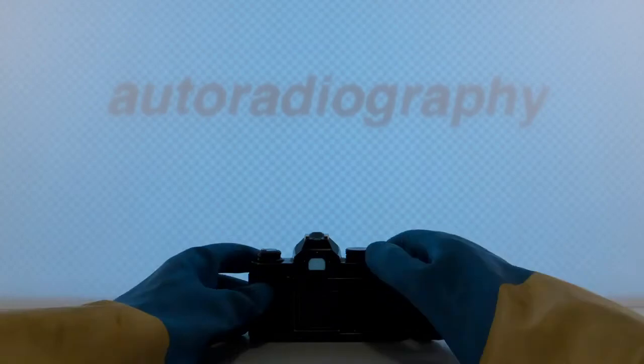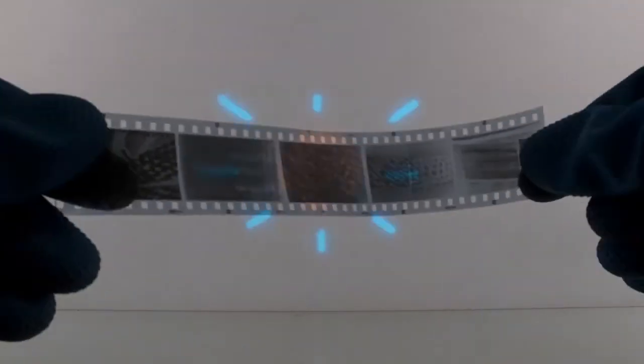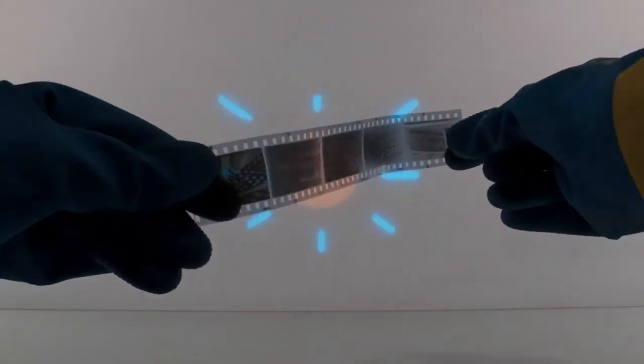Autoradiography is really just radioactive photography. We'll start by injecting into a sample a radioactive version of the drug, which acts like a tiny homing beacon. Then, we'll expose brain tissue to film. The radioactive emissions appear as dark spots revealing the drug's precise locations.